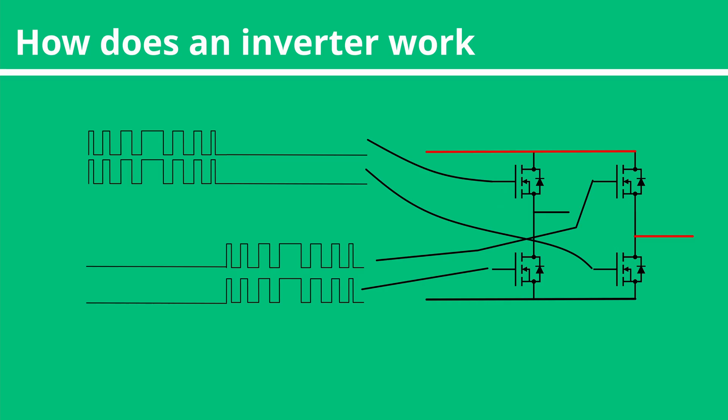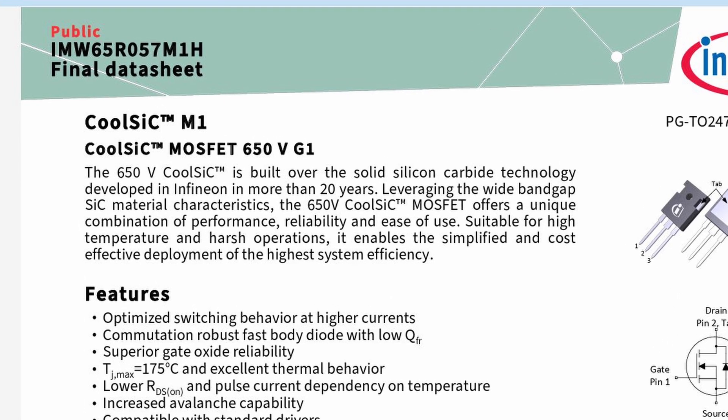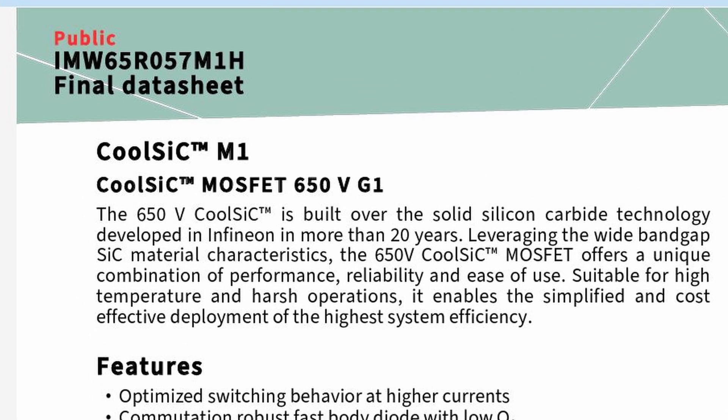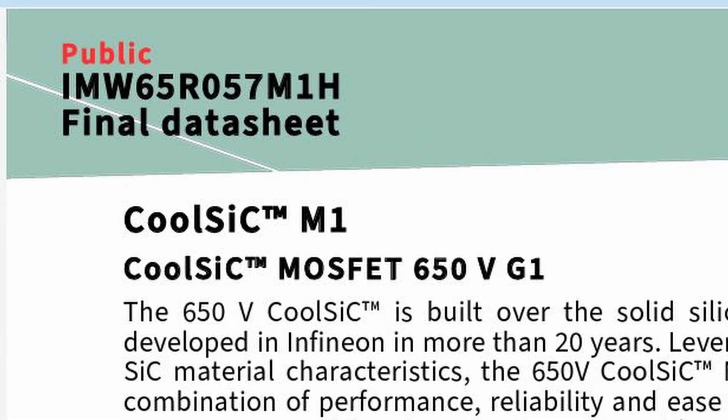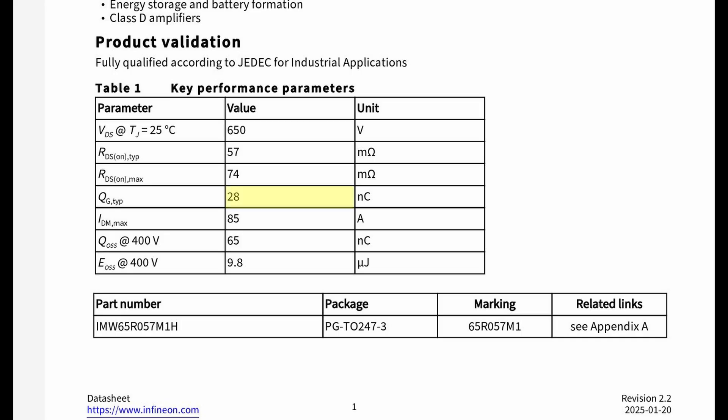On top of this, we'll want to add some drive circuitry. Switching four MOSFETs on and off uses quite a lot of current. For example, the IMW65R057M1H from Infineon Technologies — a MOSFET I'm using in my own project where I'm building a true sine wave inverter — has quite a low gate charge of around 28 nanocoulombs. That sounds very small, but in my circuit I'm sourcing and sinking 112 milliamps every time I switch, which is far more than a typical microcontroller output can provide. So you can buy a half-bridge MOSFET driver to drive each one of your inverters.